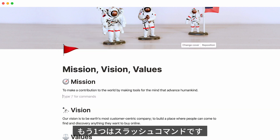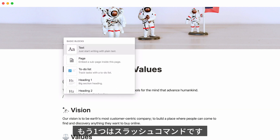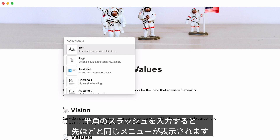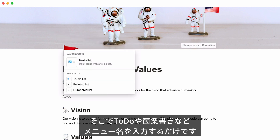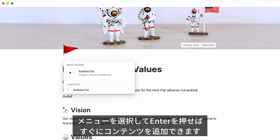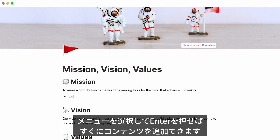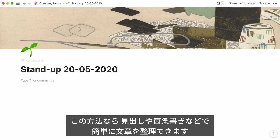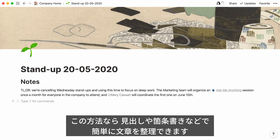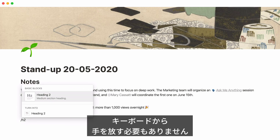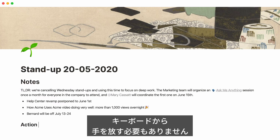Second, you can use what we call a slash command. Hit forward slash to bring up the same menu and start typing what you want, like to-do or bullet. You'll be able to call it up instantly and add it by pressing Enter.